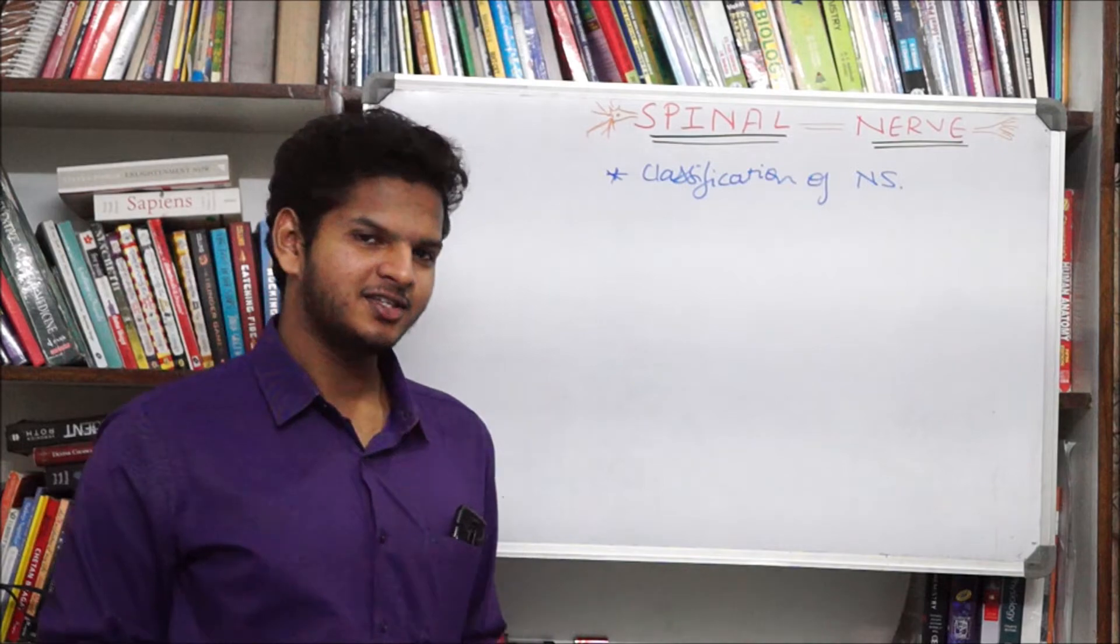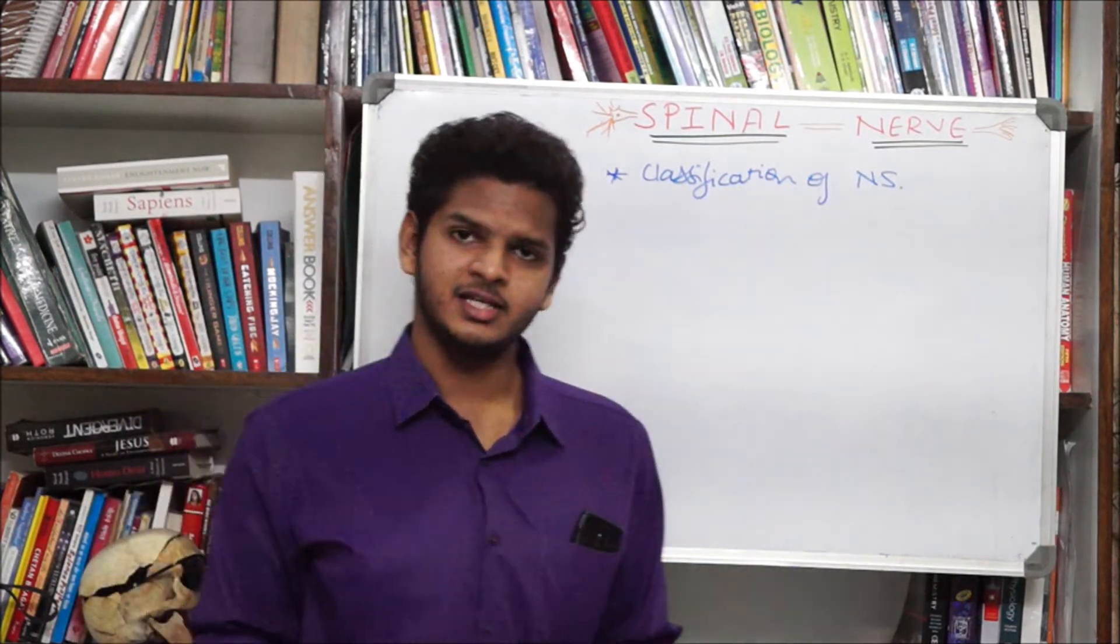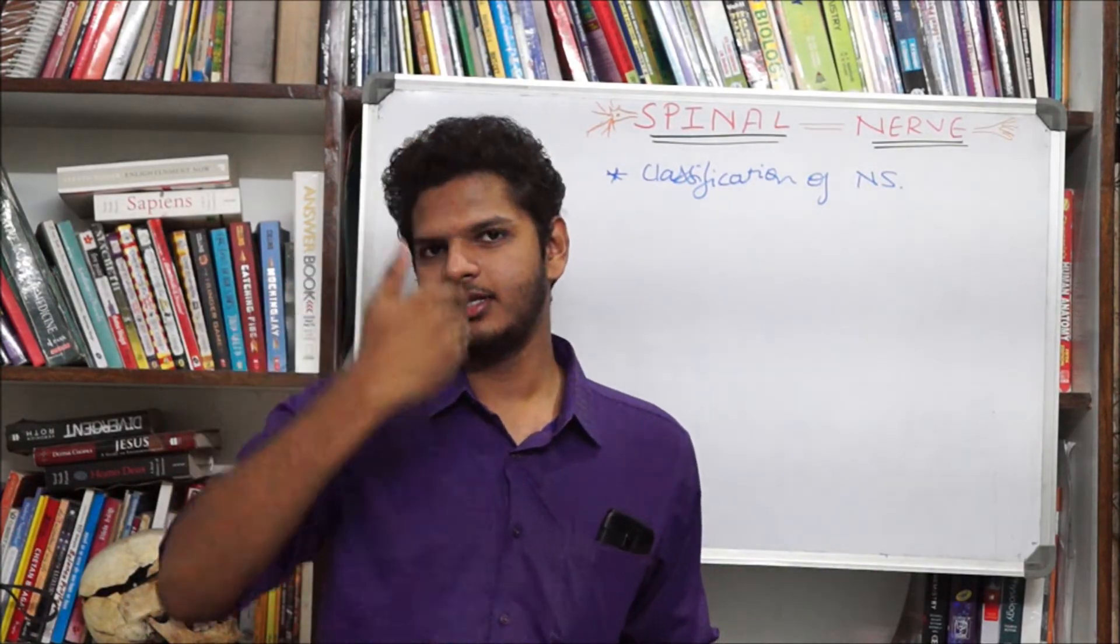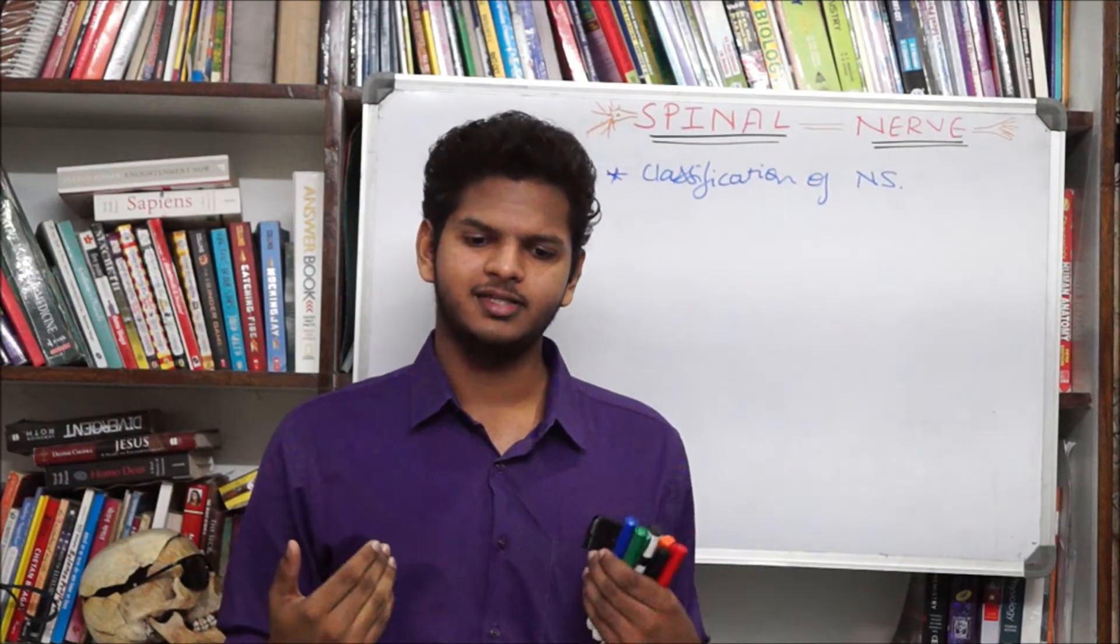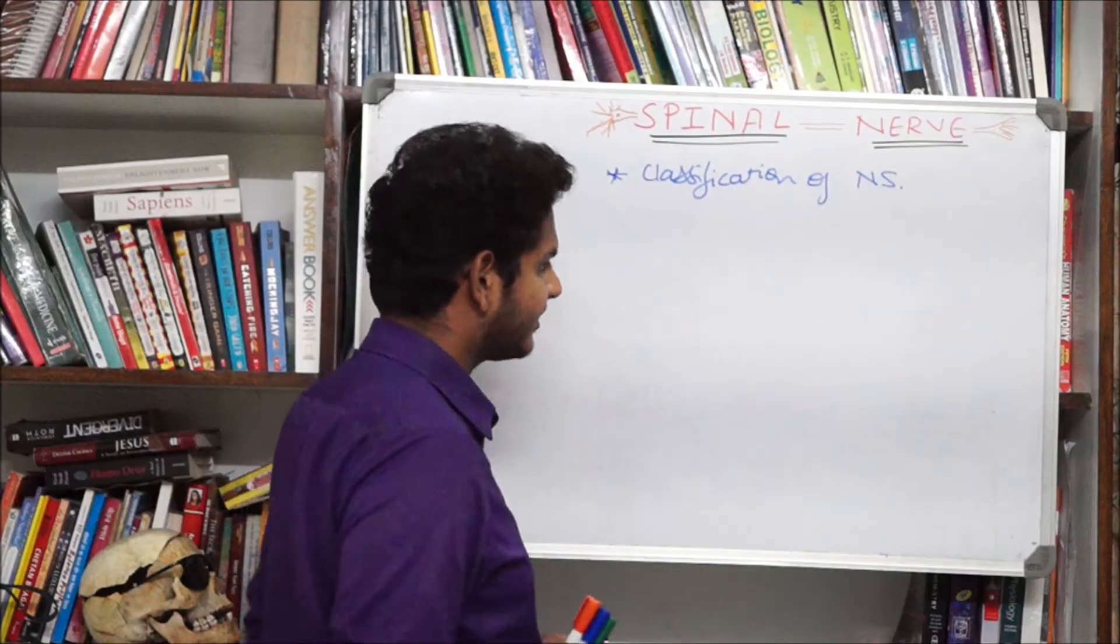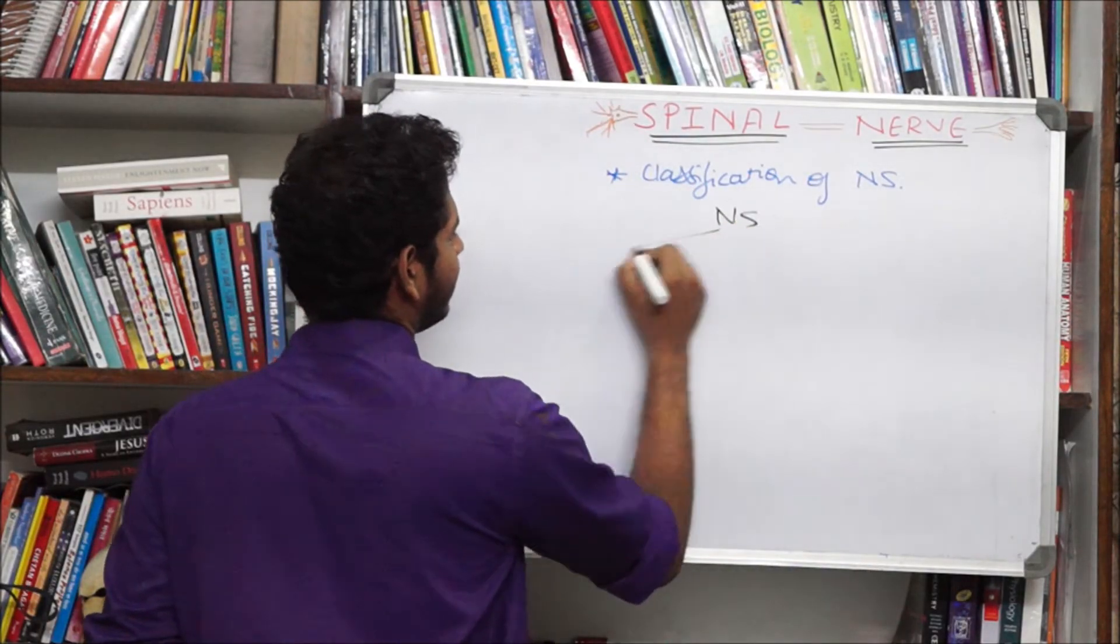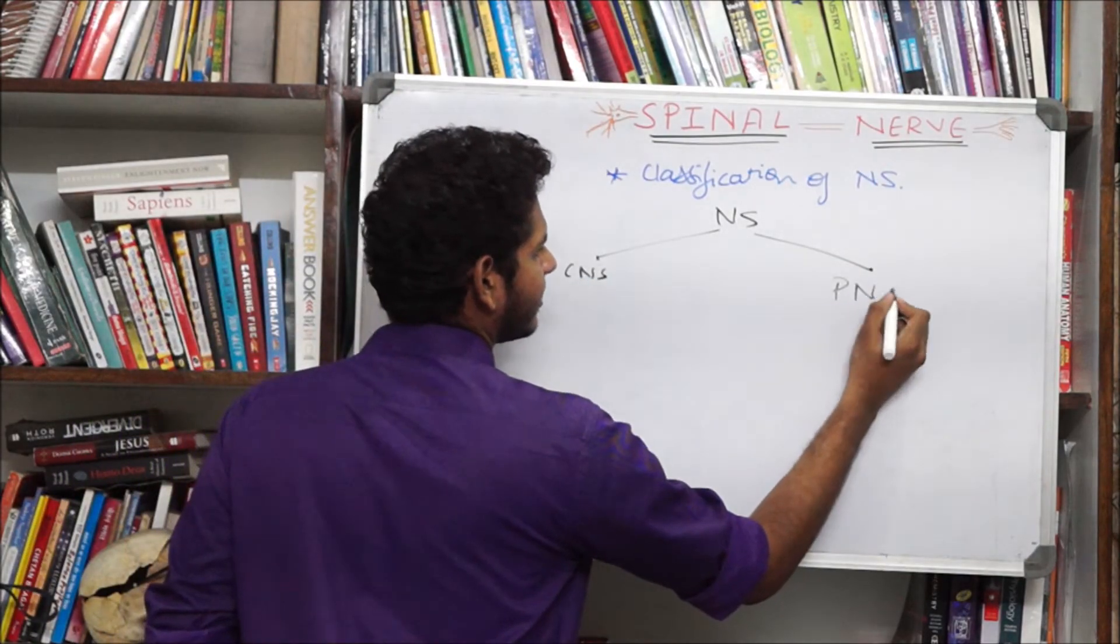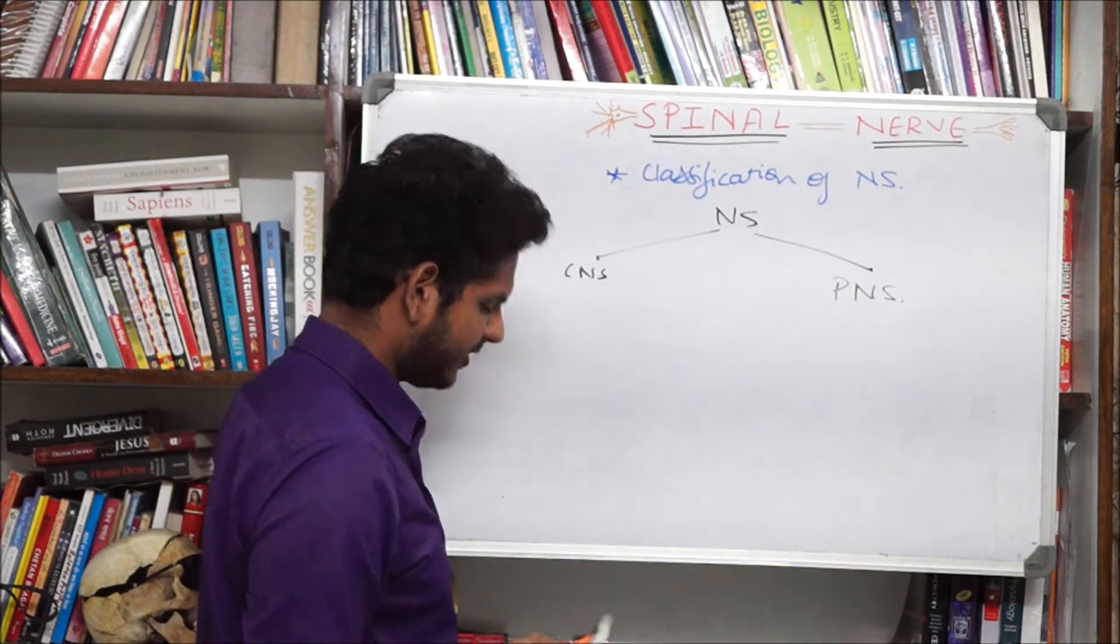So now we have the classification of the nervous system. The nervous system is divided on the basis that whether it is present in the center line of the body or the periphery. The things which are present in the center line are called the central nervous system and which are not in the center are called the peripheral nervous system. So we have the CNS and the PNS peripheral nervous system and central nervous system respectively.